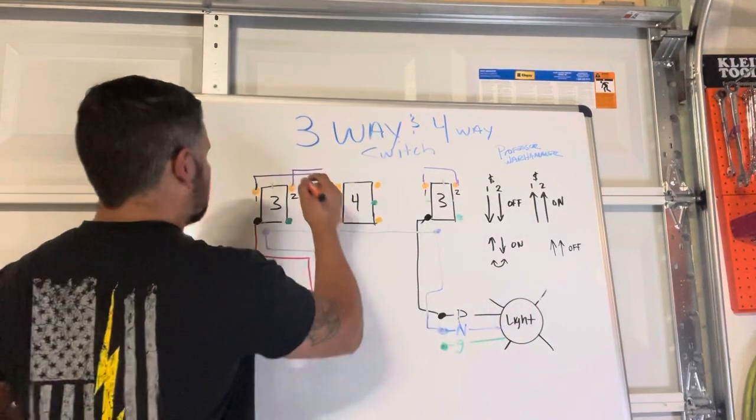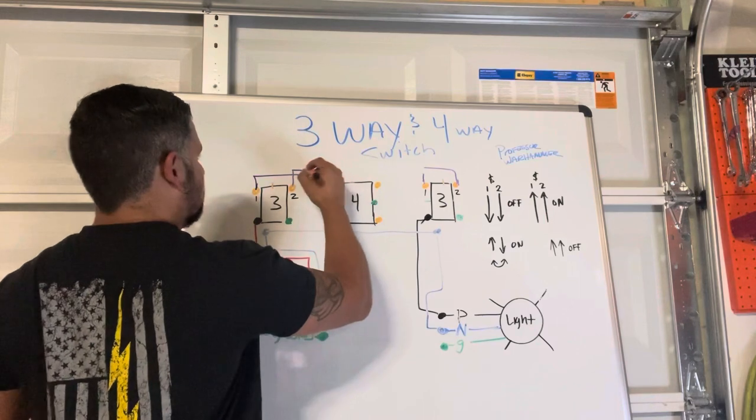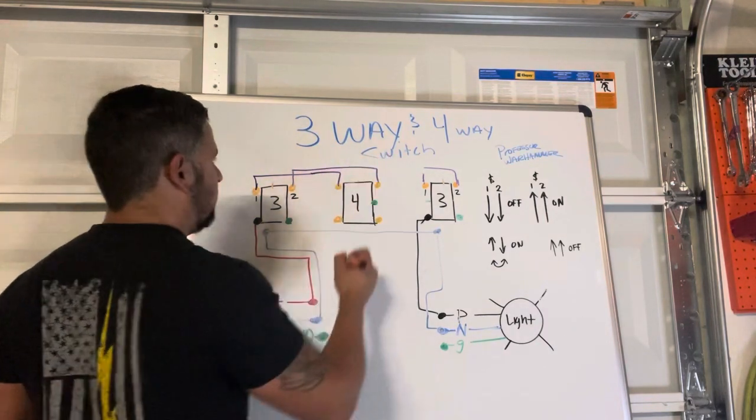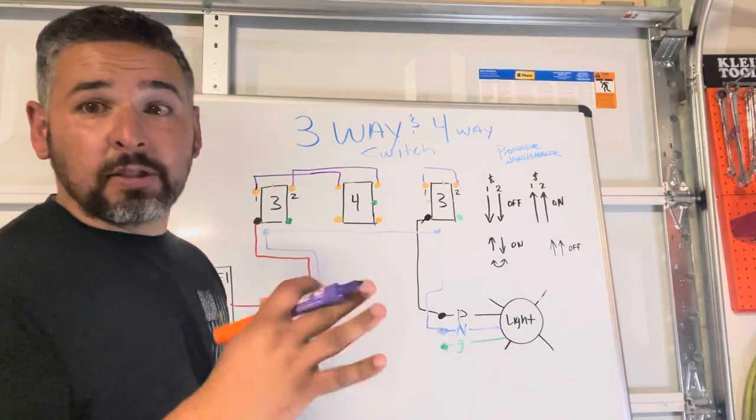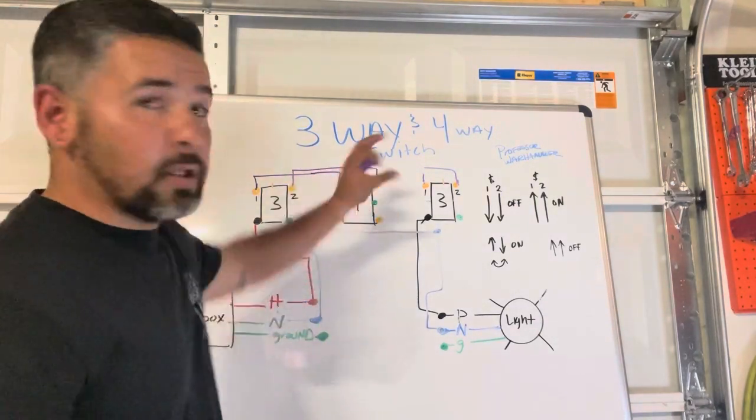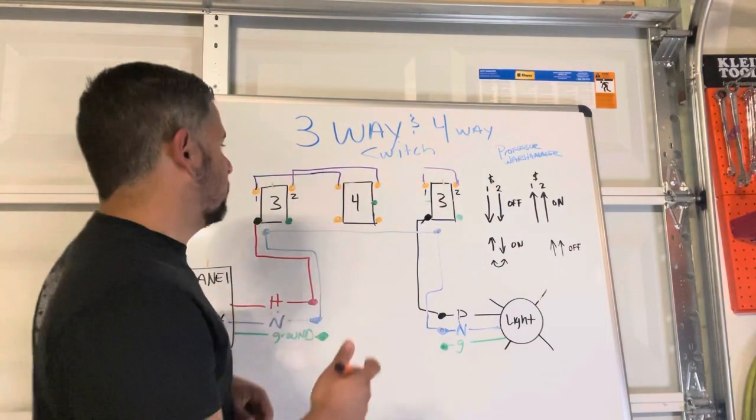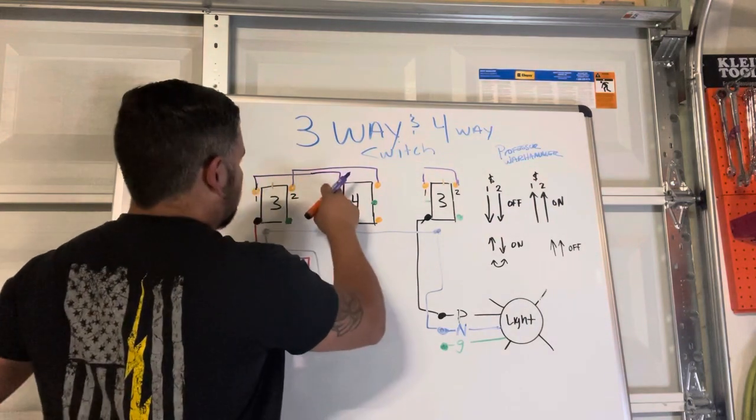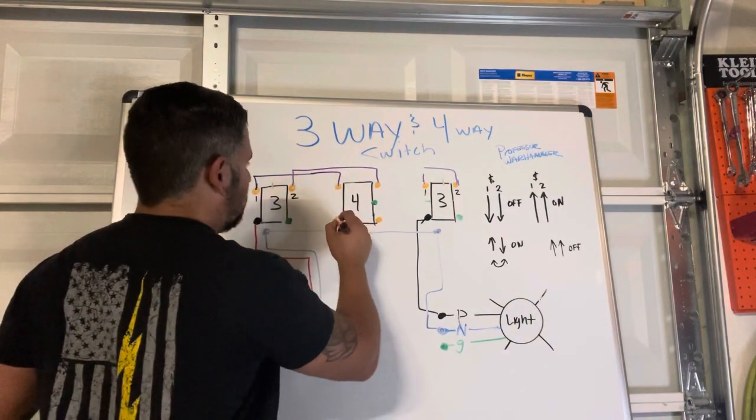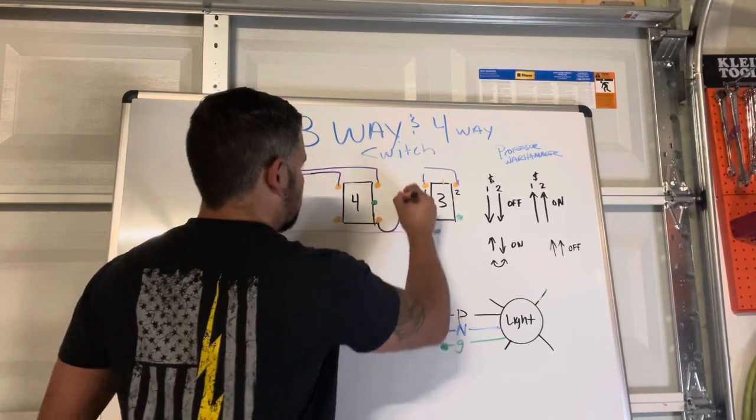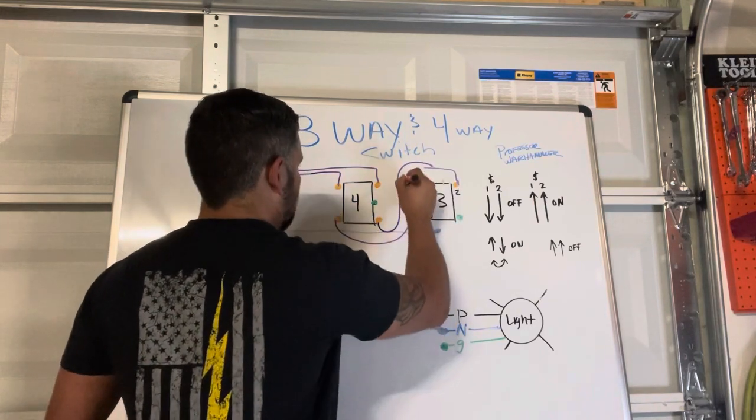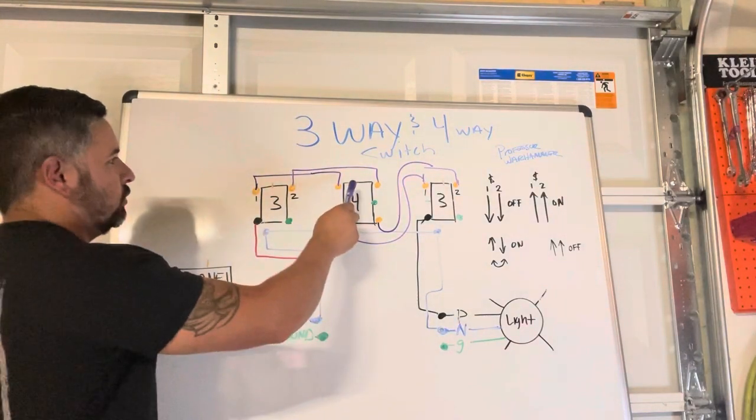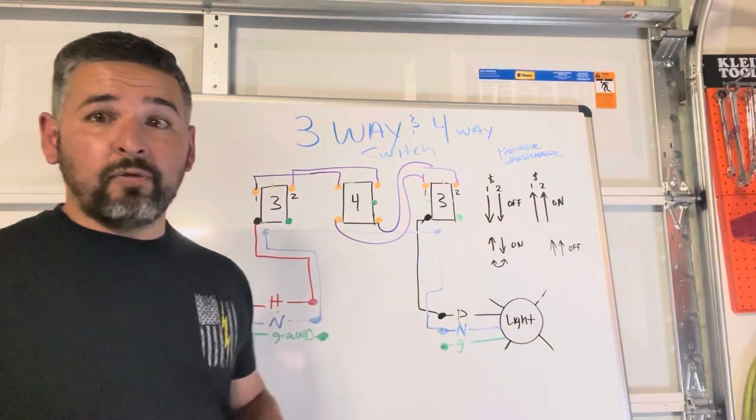Alright, so out of this little deal we're going to have the travelers come to the top set from the first switch. And once again this doesn't matter which way this goes, it can be top or bottom, I'm just doing this for whatever purposes. So we have one and one, two and two, and then right there and right here. So that is how you're going to do a four-way.